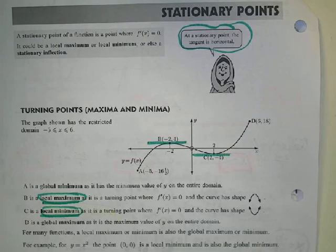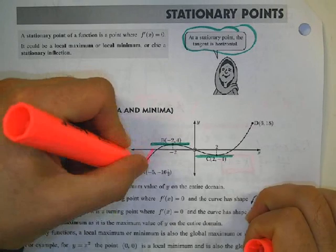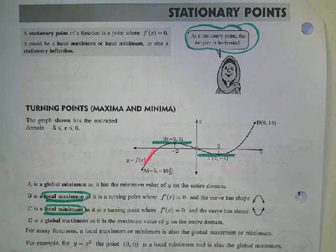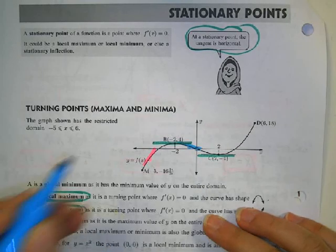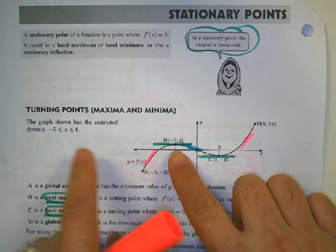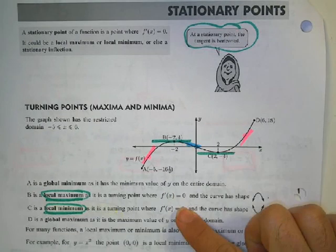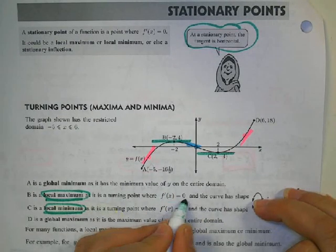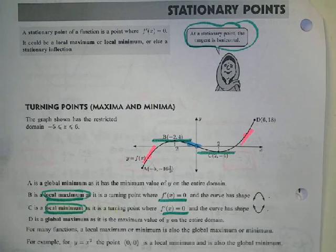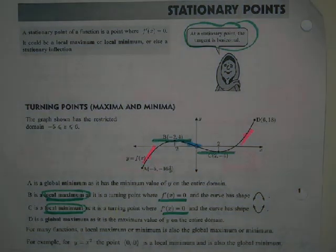Stationary points are when we have a horizontal tangent. At some points the tangent line has an increasing slope, at others a decreasing slope. The places where we have a horizontal tangent are when the derivative — the slope — is 0. Whenever the slope is 0, we're going to have either a maximum or a minimum point. The goal is to make the derivative equal to 0 to figure out if we've got a maximum or a minimum.